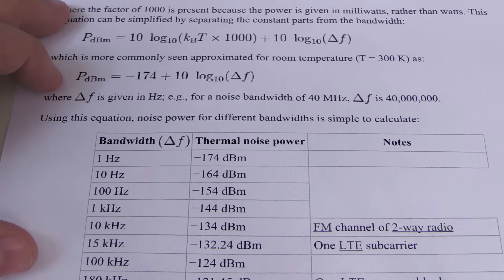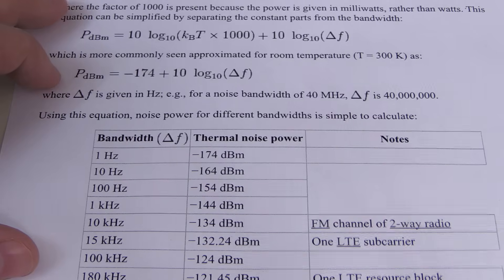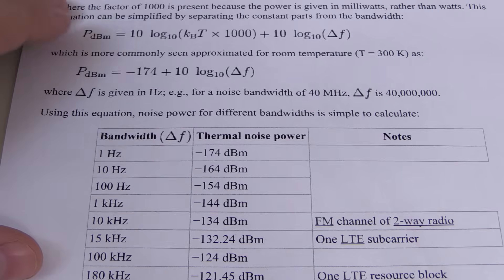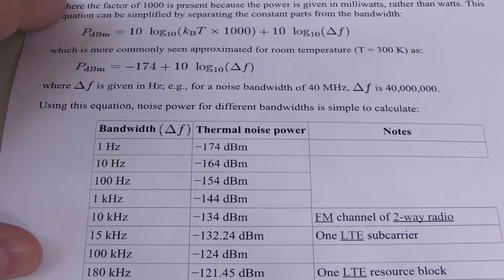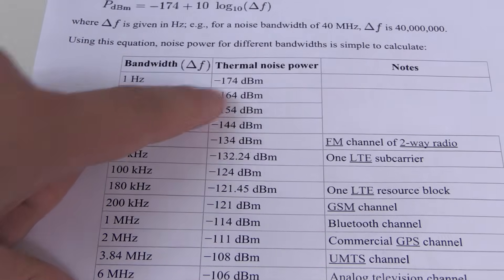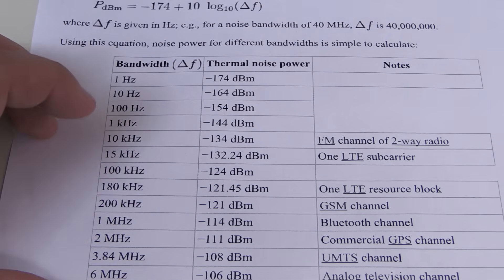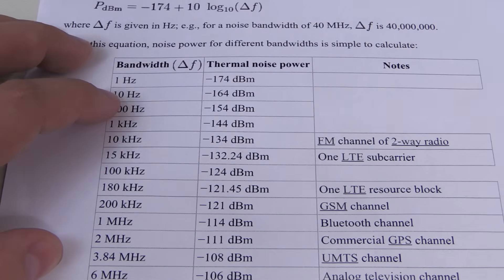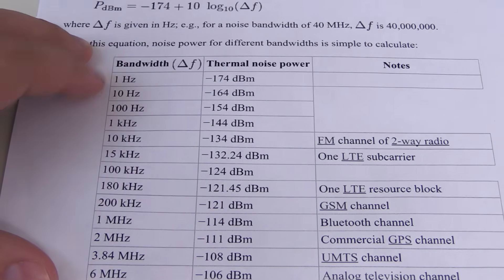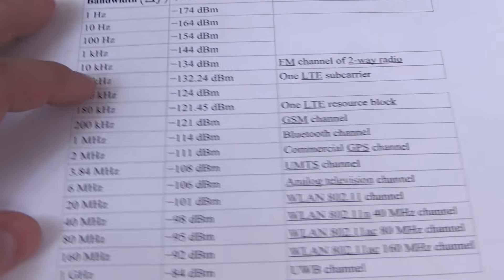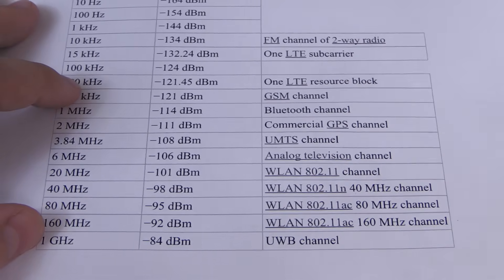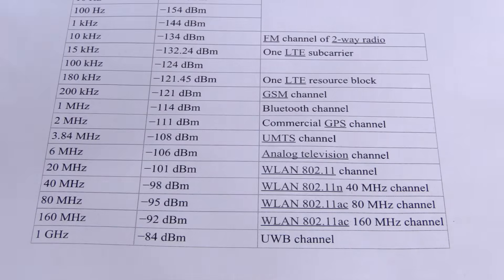If you work with multiples of 10, it makes your life really easy. If you remember 174, you can determine 1 hertz, 10 hertz, 100 hertz, 1 kilohertz, and so on very easily in your head. And if you look here in this table, 1 hertz has negative 174 dBm thermal noise power. Then 10 hertz has 10 dBm more, 100 hertz, 10 dBm more, and so on. And it gives us some odd steps here too, like 15 kilohertz and 180 kilohertz, because it corresponds to a certain channel bandwidth.